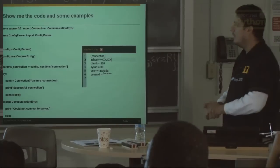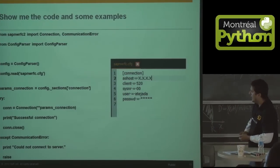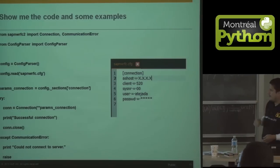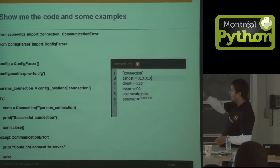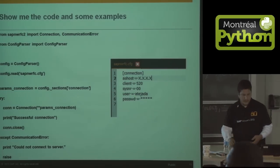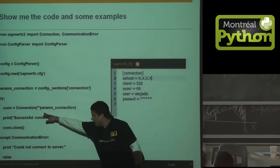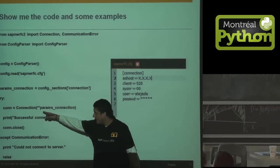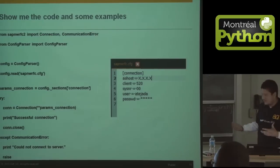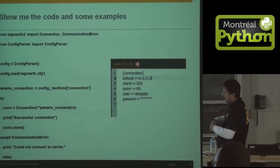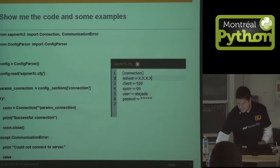Here we have an example of using PyRFC. We have a CFG file with all the connection parameters to the ERP. We just need to import the library and import the config parser to read the file. The most important part is where we read and set to the connection the parameters from the file. This application will simply report whether we have a successful connection or couldn't connect to the server — it's very basic just to show how it works.